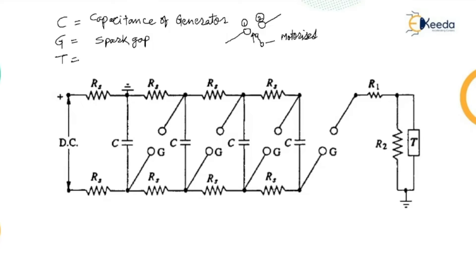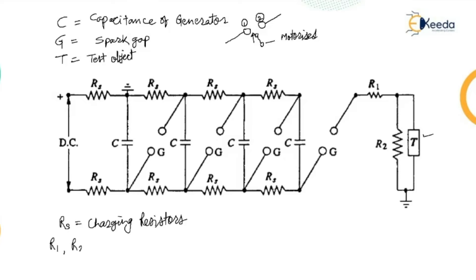T is the test object, which is nothing but the specimen placed in the circuit. RS is the charging resistors. Then we have two resistances placed here which are called the wave shaping resistors. Electrical elements R1 and R2 are used for that wave shaping.